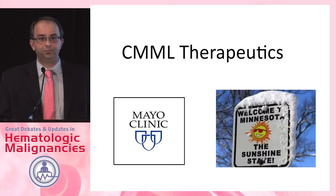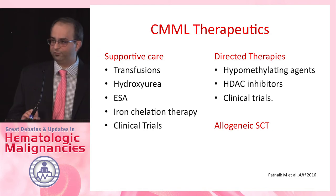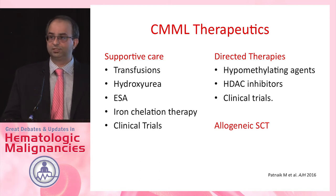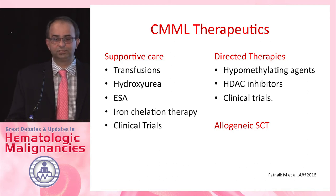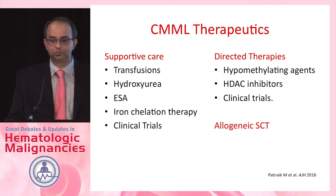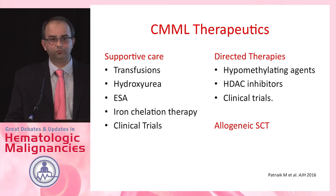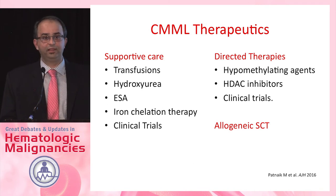Moving on to therapeutics — this section is an orphan child, because a lot of it has been borrowed from myelodysplastic syndromes or myeloproliferative neoplasms. Supportive care includes transfusional support, hydroxyurea for proliferation, erythropoiesis-stimulating agents for anemia, and a controversial role for iron chelation therapy. Directed therapies are usually epigenetic — hypomethylating agents or clinical trials incorporating them — and the only potential cure remains allogeneic stem cell transplant.